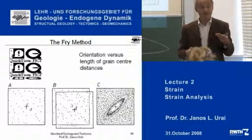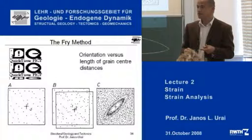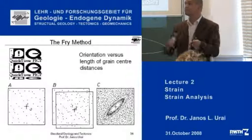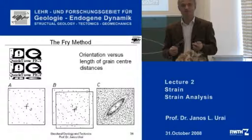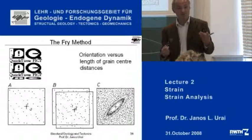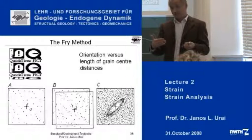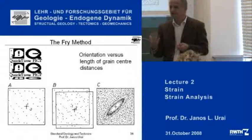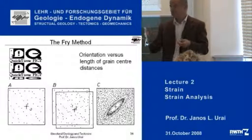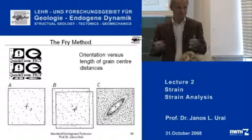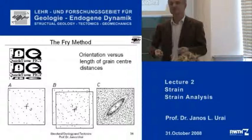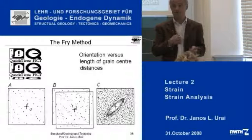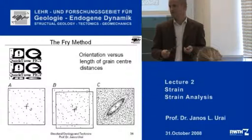More or less like this, there are many other methods — there is a whole book full of strain analysis. In fact, the book of Ramsay and Huber has a very extensive collection. The main point to take home after this lecture is that when you look at deformed rocks, you have to keep your eyes open for objects that allow you to measure the strain: fossils, sand grains, long veins or fractures — they all have information about the strain. If you have found these objects, you can go into the book and find the method you need.